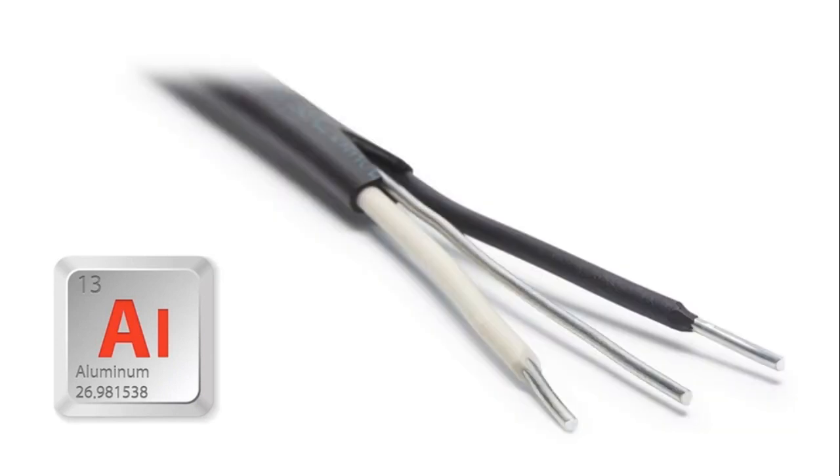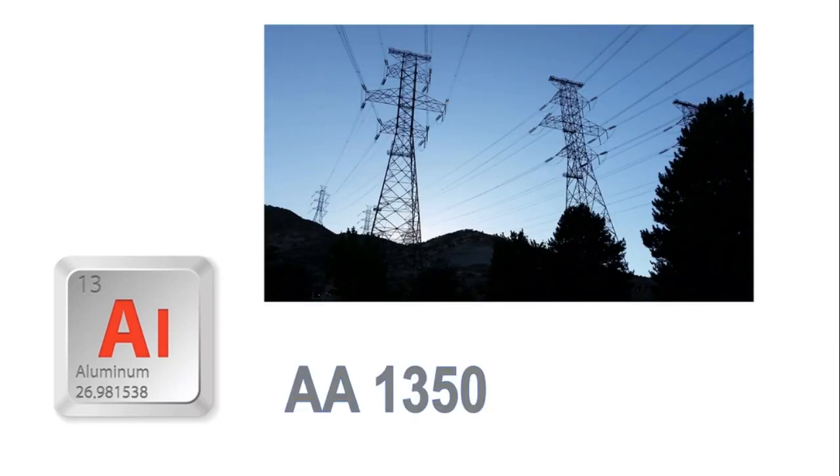There was a copper shortage from the middle of 1960s through 1970s, and the manufacturers decided to start using the alloy AA-1350 that was designed for transmission power lines for house wiring. The problems started right away. To this day there are plenty of homes left with that old aluminum wiring from that era.